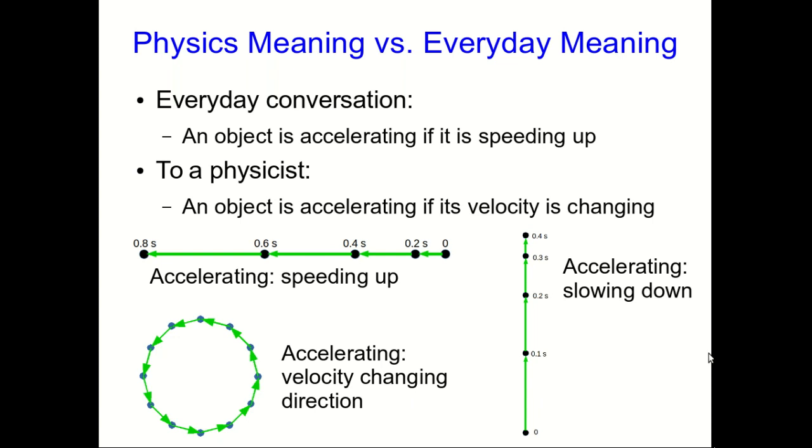There's nothing wrong with the everyday meaning of acceleration, but physicists use the word differently because it's more useful. The reason comes down to something we'll see later in the course: the causes of objects speeding up, slowing down, or changing direction of motion are all the same. Since the causes are the same, we might as well give the same name to the effect.